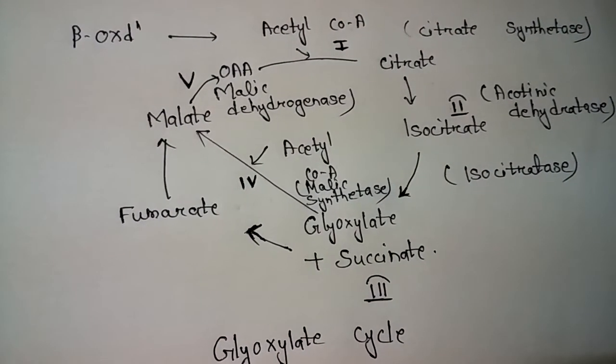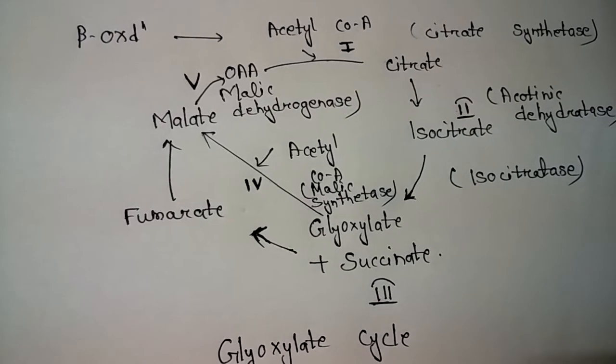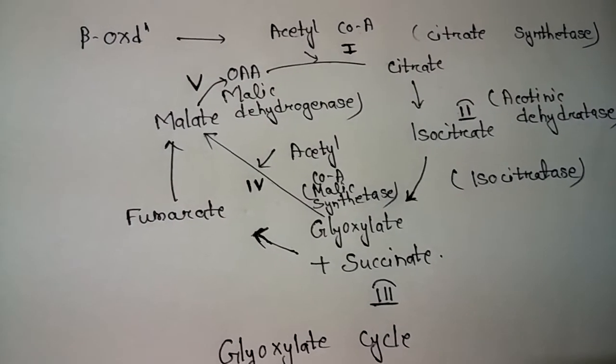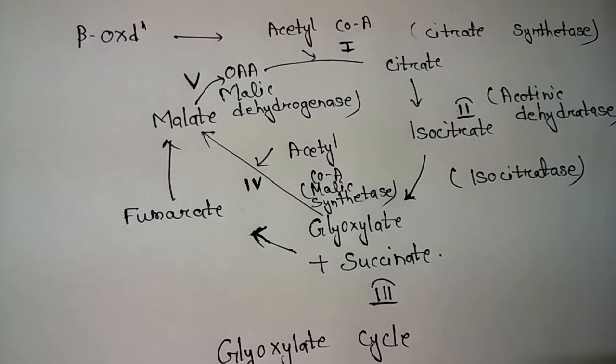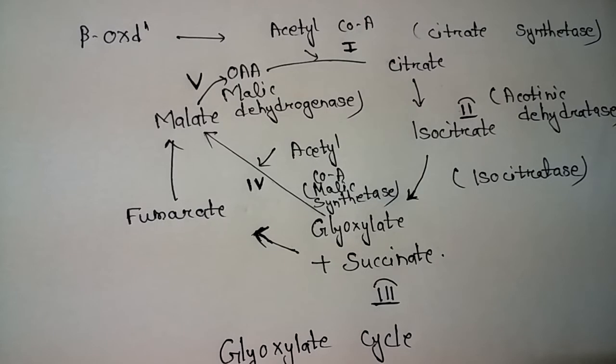Isocitrate lyase's main function is to cleave isocitrate into glyoxylate and succinate, and malate synthetase is required for malic acid formation.